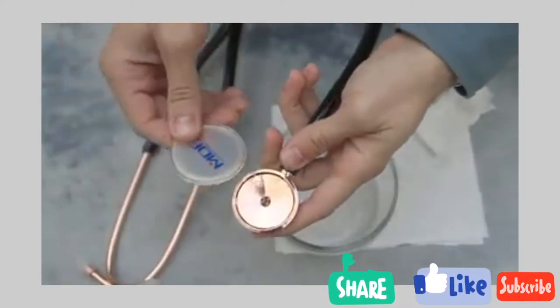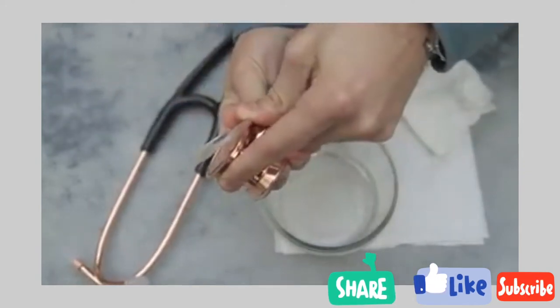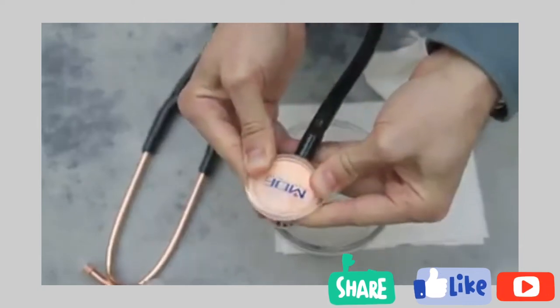To install the retaining ring and diaphragm onto the chest piece, place the lip of the ring under the edge of the chest piece. Continue to press the ring along the edges of the chest piece until it snaps into place.